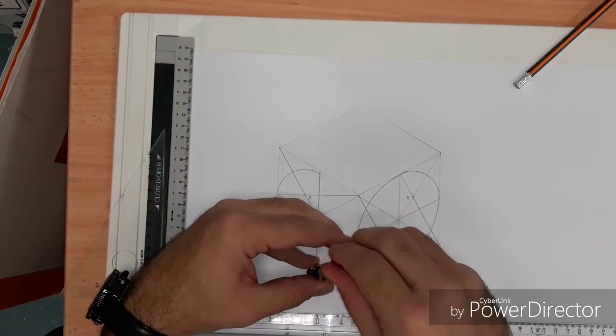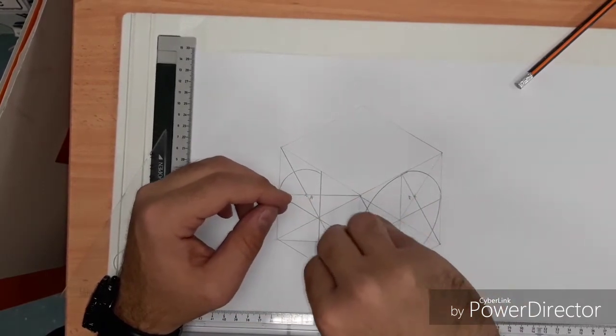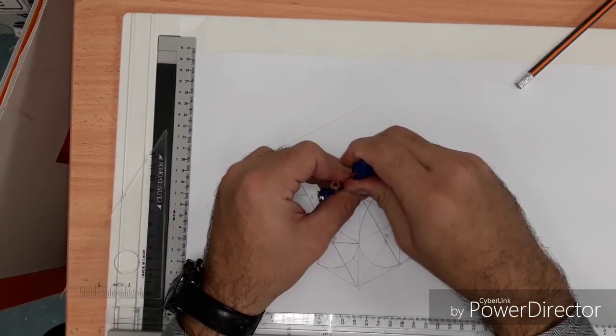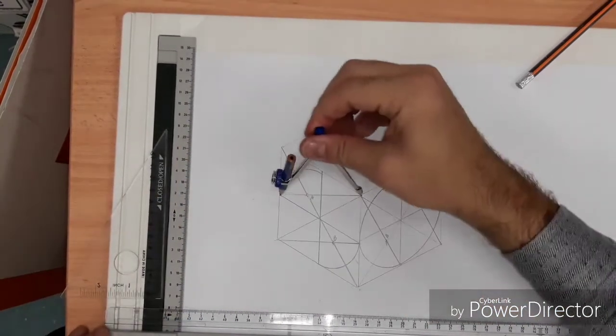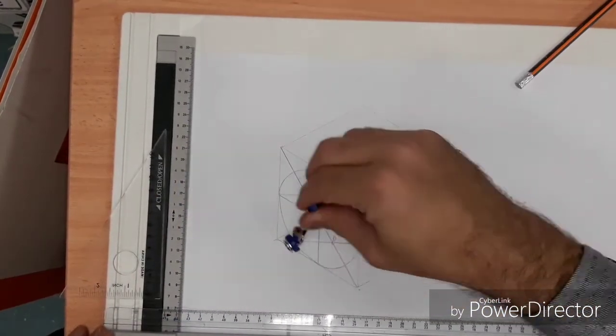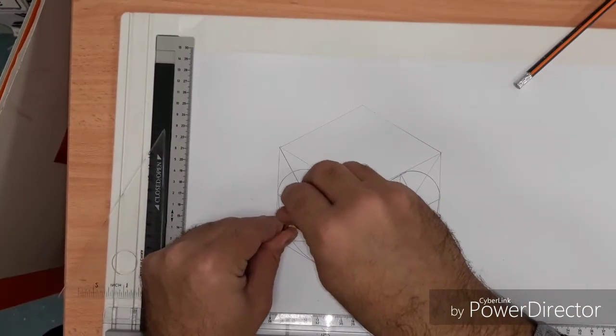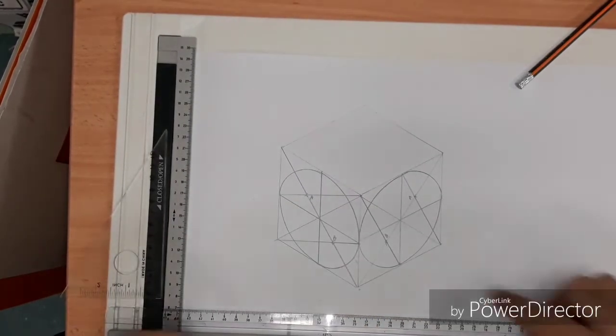Sometimes, if you do this quickly, as you can see, you're going to lose a bit of accuracy. Obviously, the more time you spend on making sure your lines are perfectly lined up, then you're going to end up with a better outcome. As you can see here, finish off the ellipse, or the isometric circle. And there we have it.